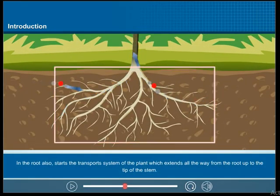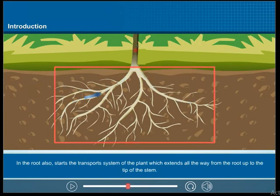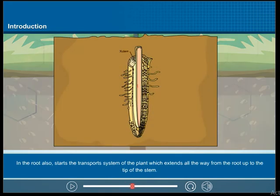In the root also starts the transport system of the plant, which extends all the way from the root up to the tip of the stem.